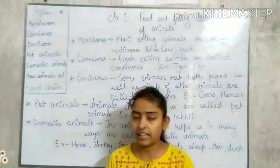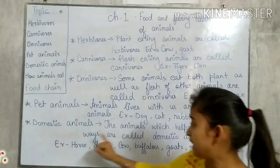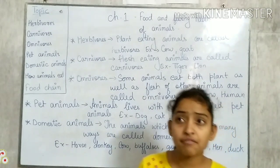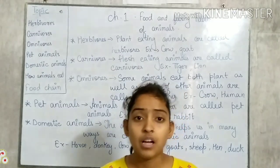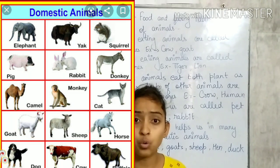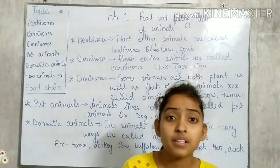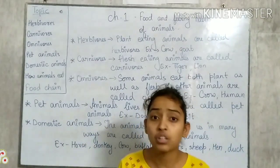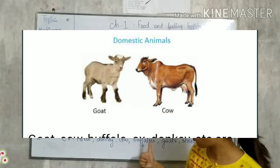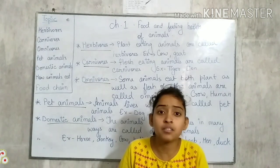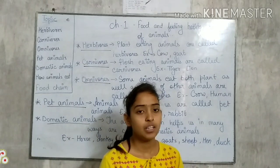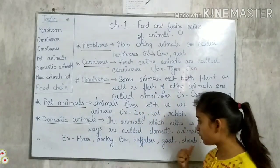Next is Domestic Animals. The animals which help us in many ways are called domestic animals. Like horse and donkey — they help us to carry loads and luggage. Cows, buffaloes, and goats help us by giving milk. Sheep give us wool. Hen and duck — we eat the flesh of hens and ducks. So these are the examples of domestic animals.